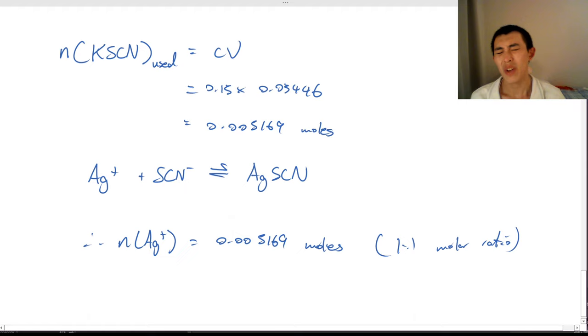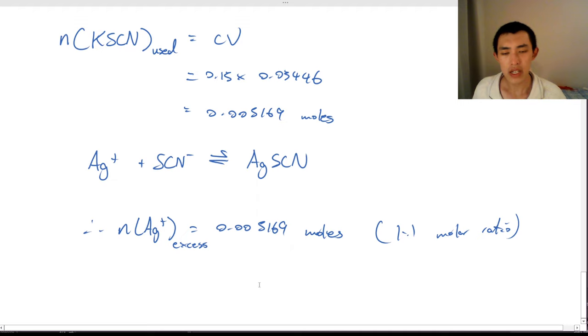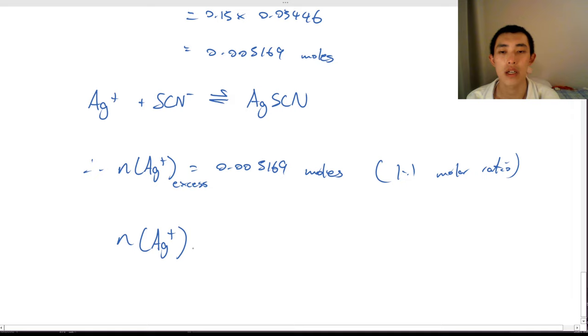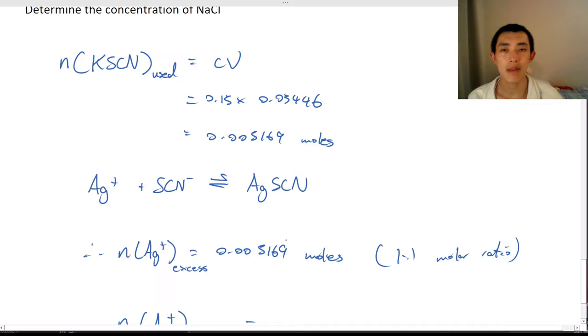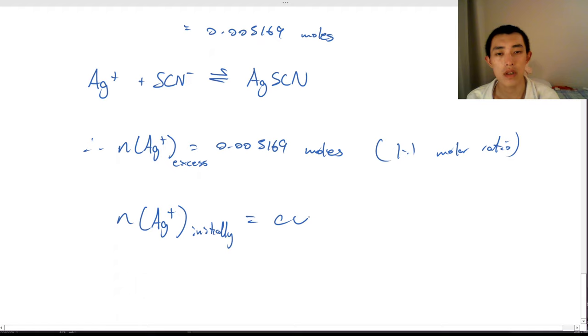So we have that many moles of silver left in excess. This is how many moles of silver were left after all the original chlorine was reacted away. Then the next question I want to ask is, well then how many moles of silver were there initially? CV equals 0.2 times 0.1 equals 0.02 moles. And let's think about this.